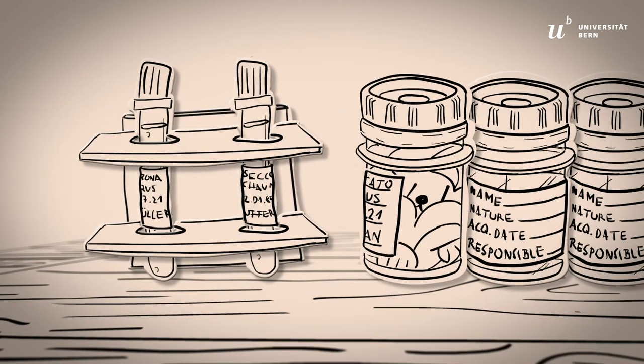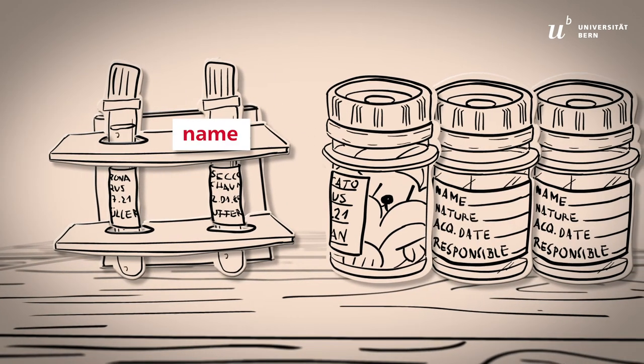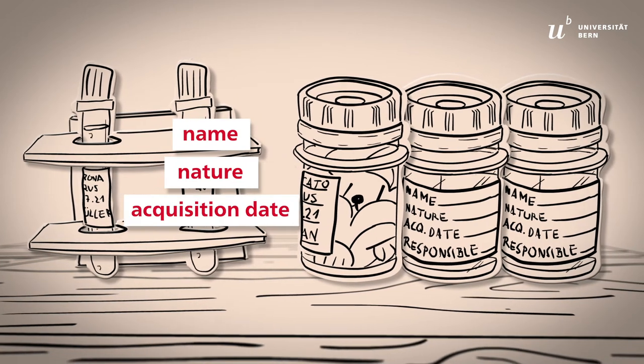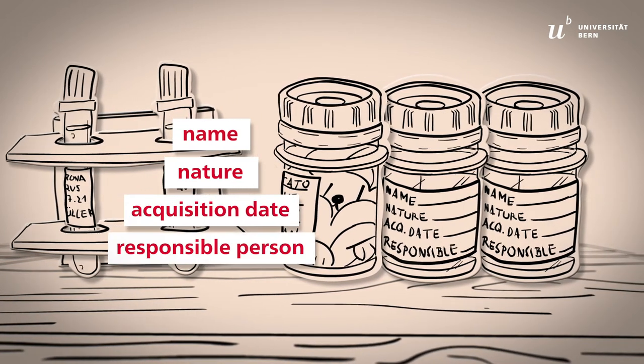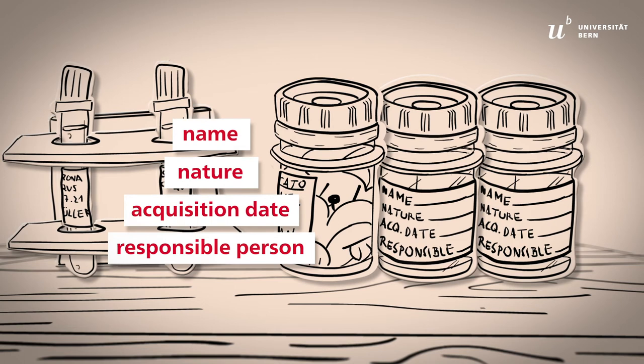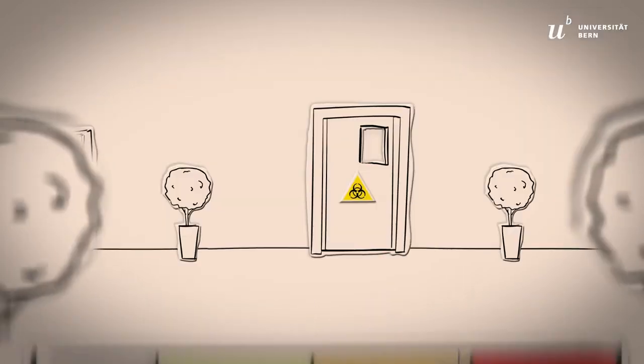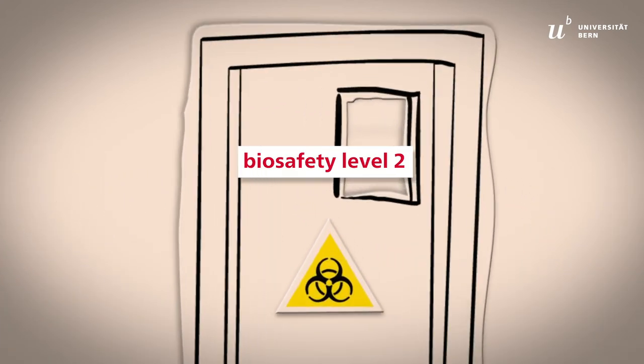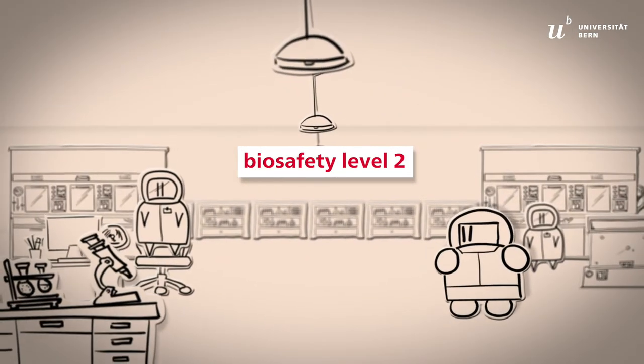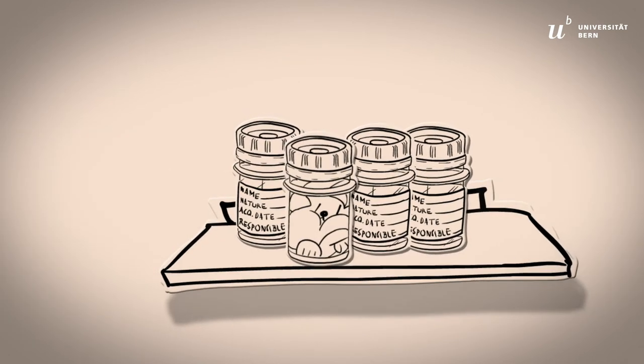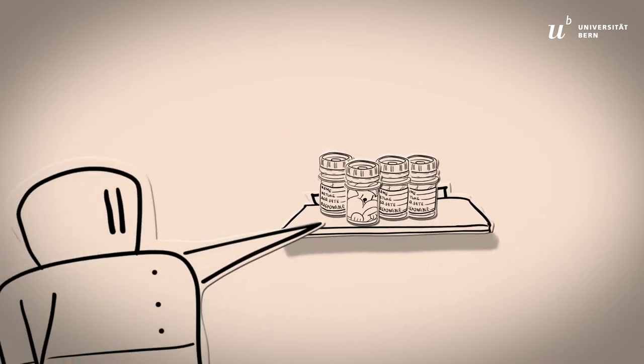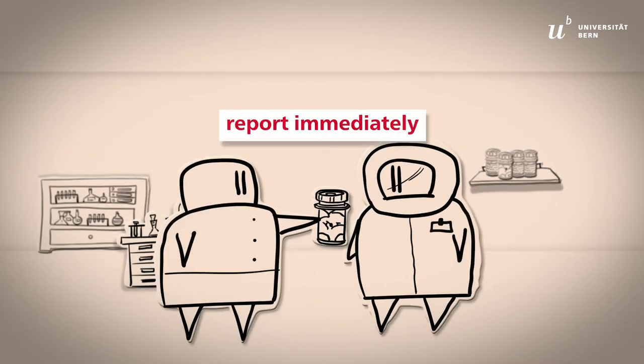The containers must always be labeled with the name, the nature, and the acquisition date of the agent, as well as the name of the person responsible. Organisms in risk group 2 or higher must be stored in a laboratory of biosafety level 2 or higher. Unlabeled containers must not be used and must be reported immediately to the biosafety officer.